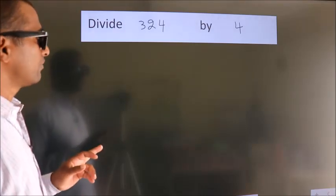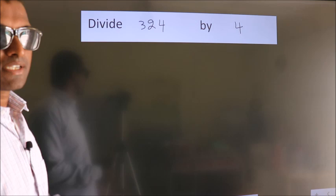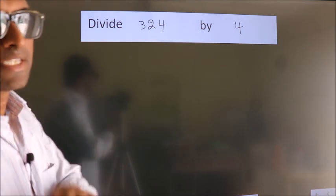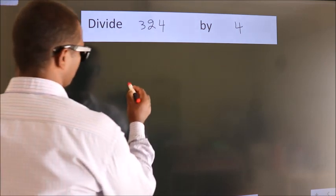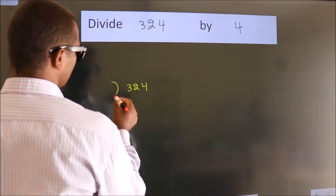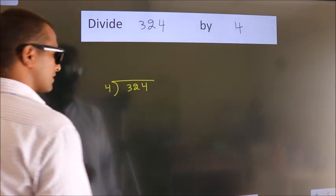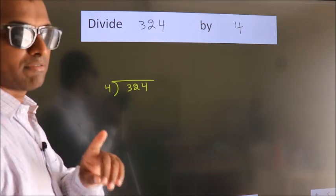Divide 324 by 4. To do this division, we should frame it in this way: 324 here, 4 here. This is your step 1.